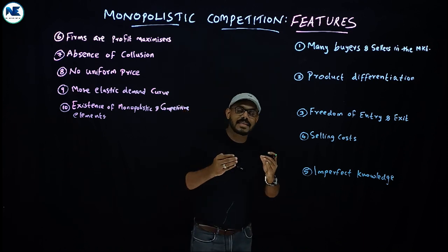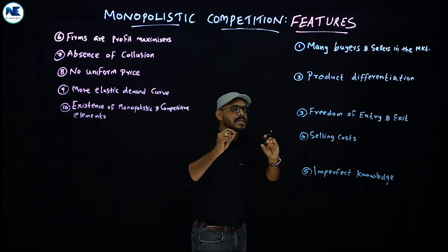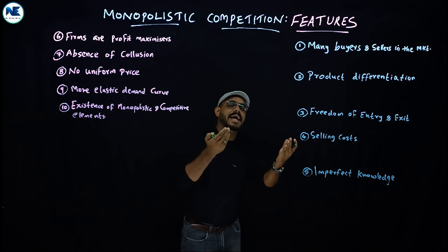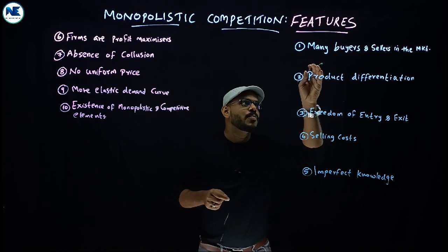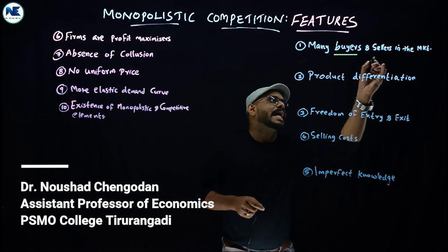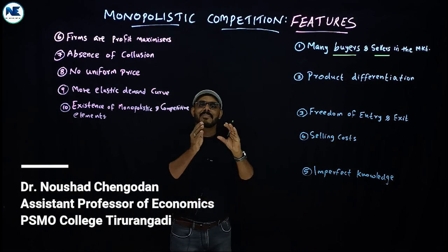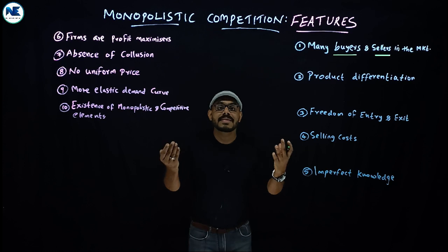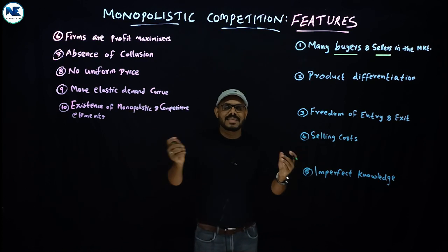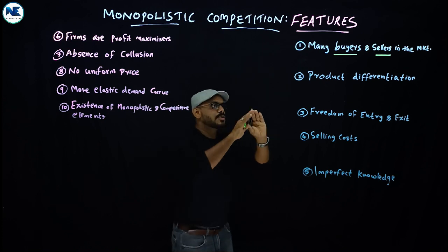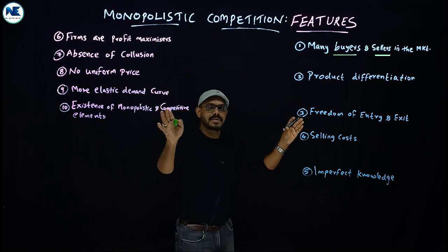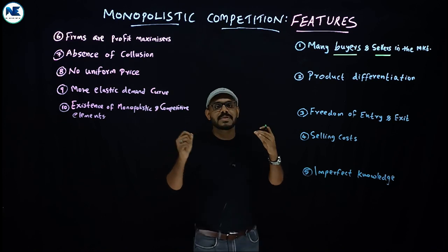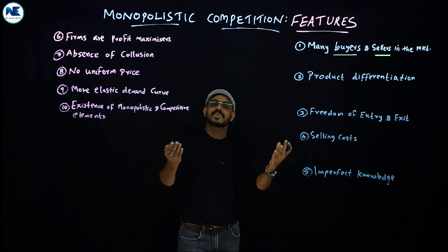The first feature or characteristic is the existence of a large number of sellers and buyers — in simple terms, many buyers and sellers in the market. In monopoly, we can see only one seller who has the dominant power in the market and controls the entire product, which has no close substitutes. But here in monopolistic competition, we see a large number of sellers.